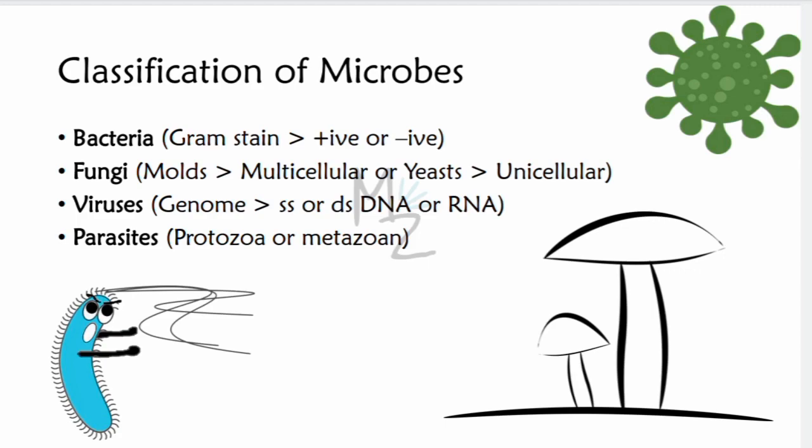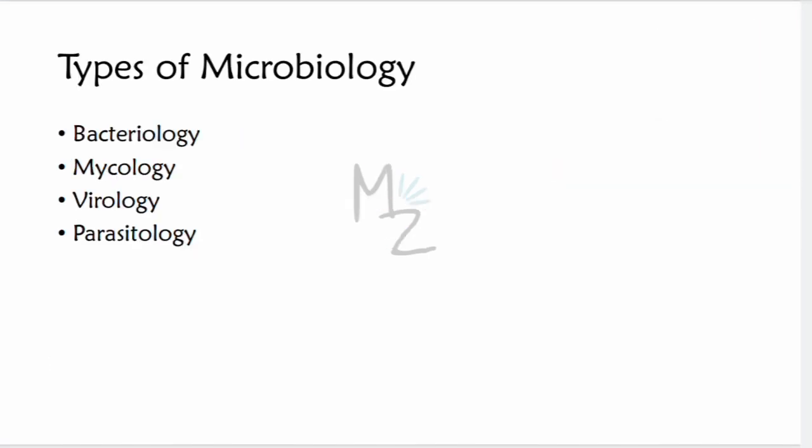Now we know what microbiology is, what microbes are, and how many types of microbes there are. So now we can classify microbiology by type: if you study bacteria in detail, this is bacteriology; for fungi it is mycology; for viruses it is virology; and for parasites it is parasitology.